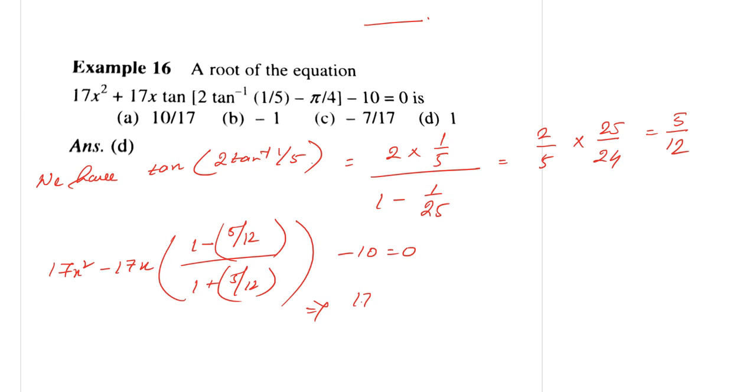And this equals (x - 1)(17x + 10) = 0. So this implies x = 1 is a root of the equation. Thank you for watching students, we'll be back with more in the next video.